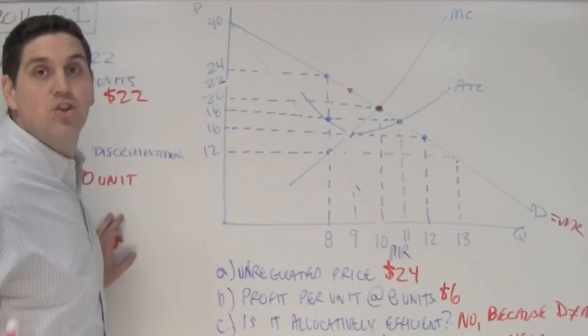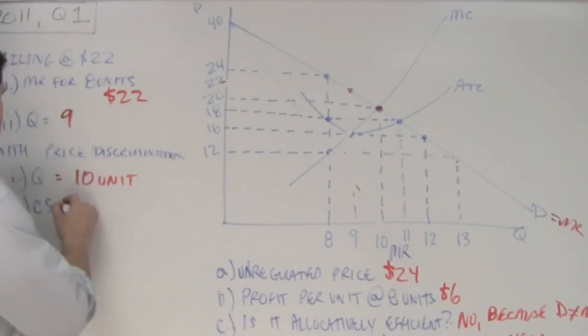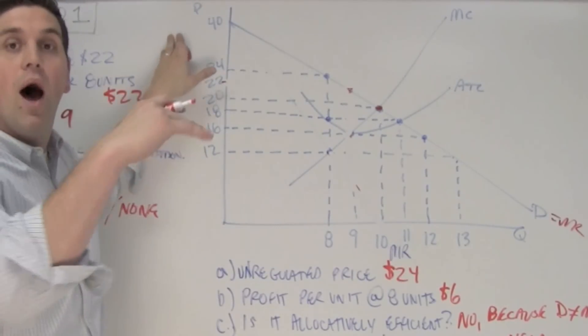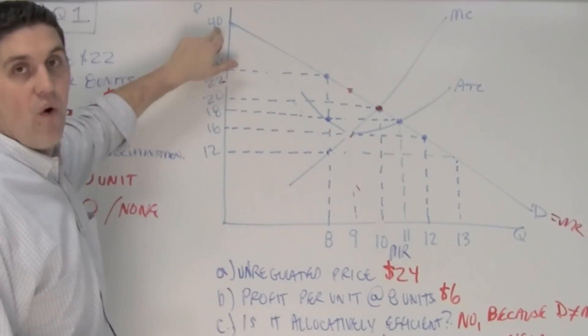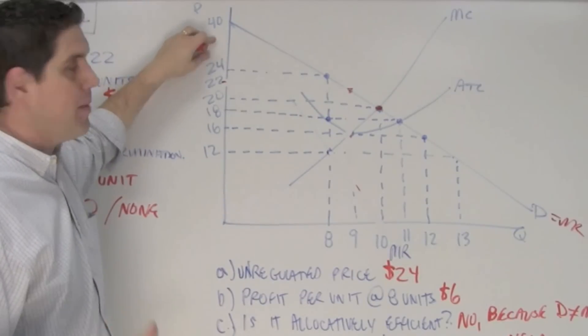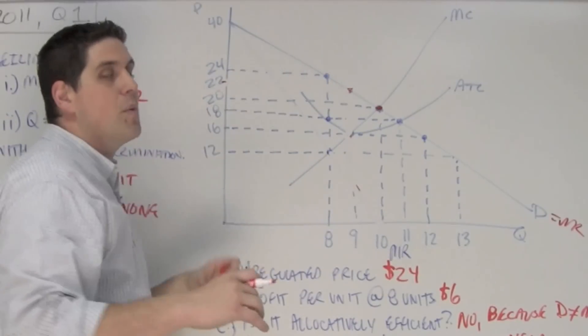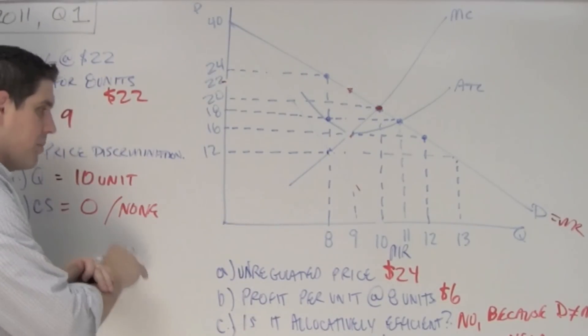Now, the last question, what about consumer surplus? Well, the consumer surplus would be zero. There would be none. Wait, why? Well, because if they're price-discriminating, charging every single person up to what they want to pay, the person who's going to pay 40 paid 40. The person who's going to pay 30 paid 30. The person who's going to pay 24 paid 24. And so with price discrimination, each consumer pays up to what they want to pay, so there is no consumer surplus.